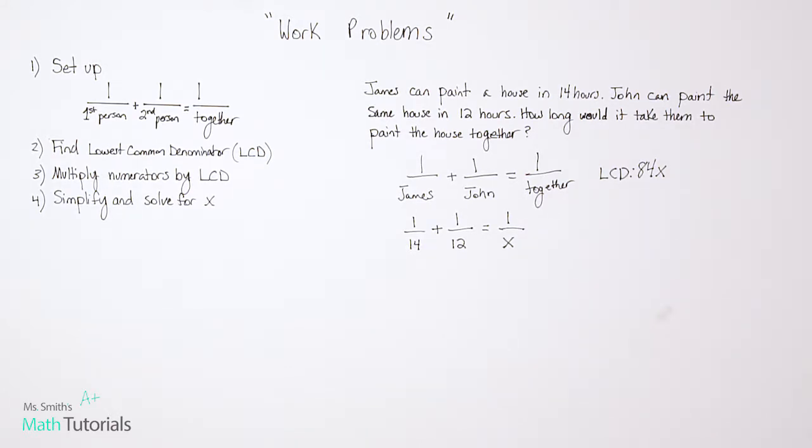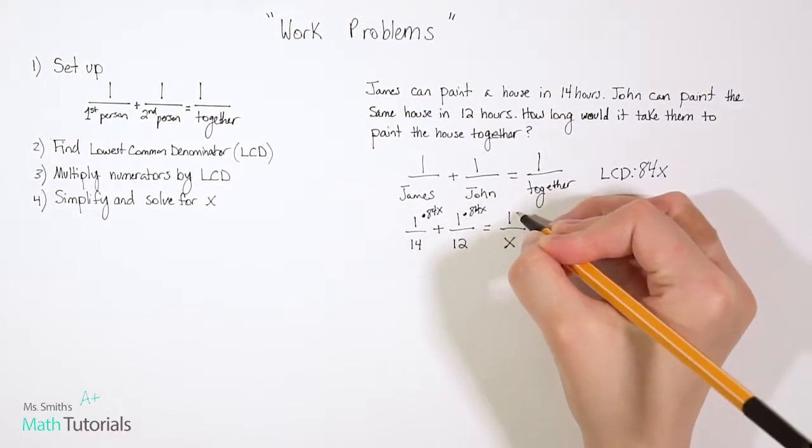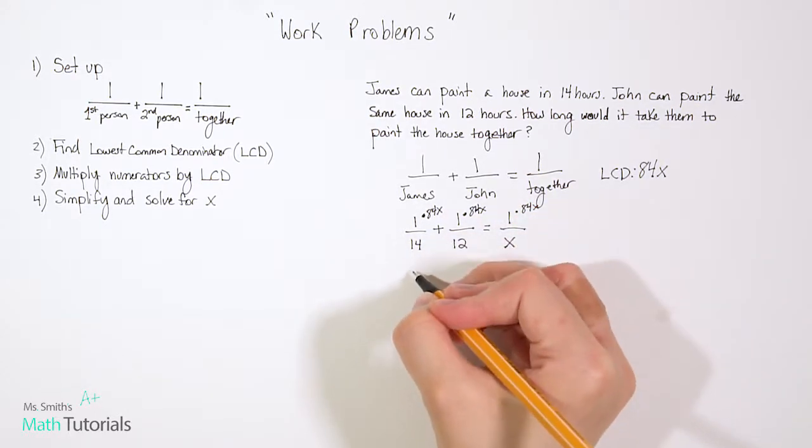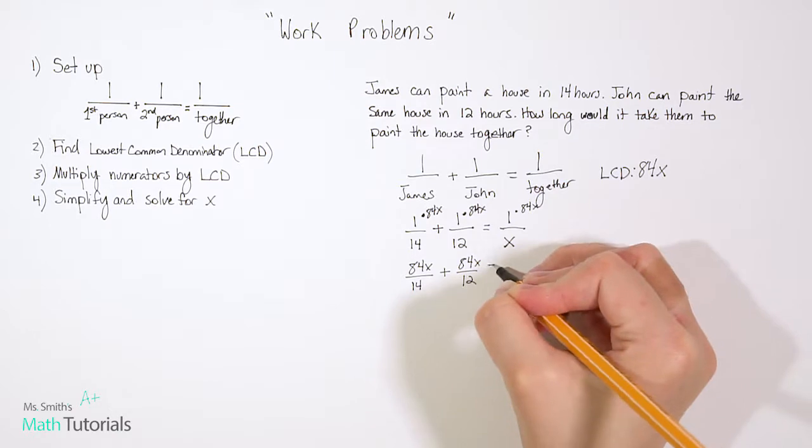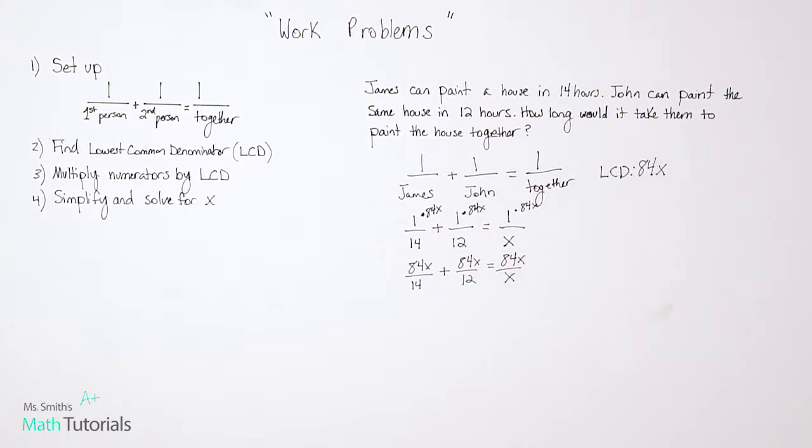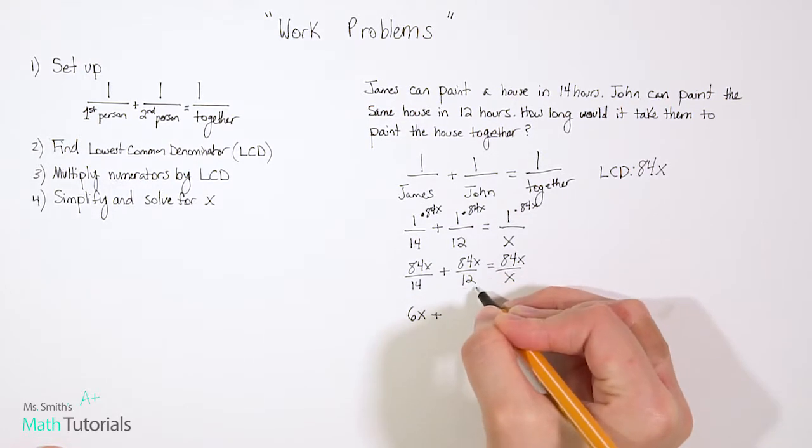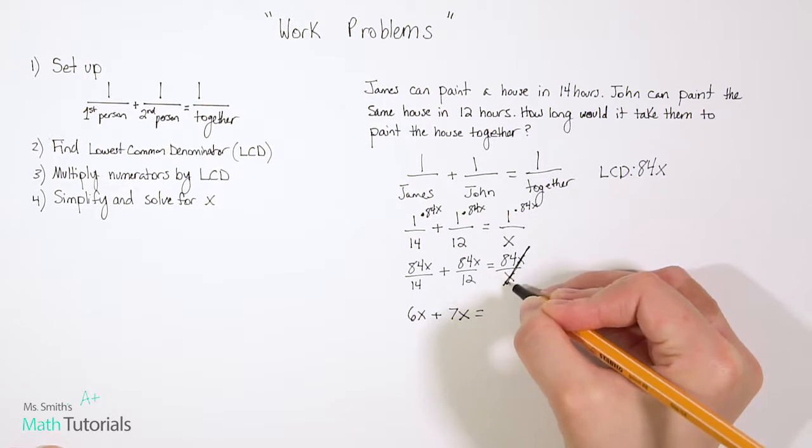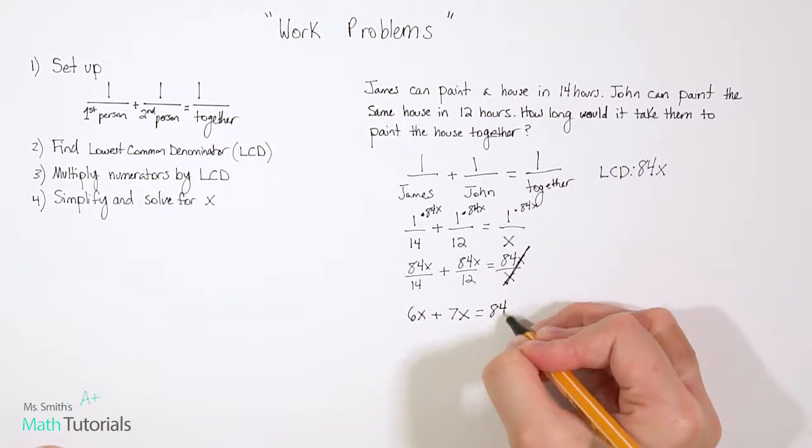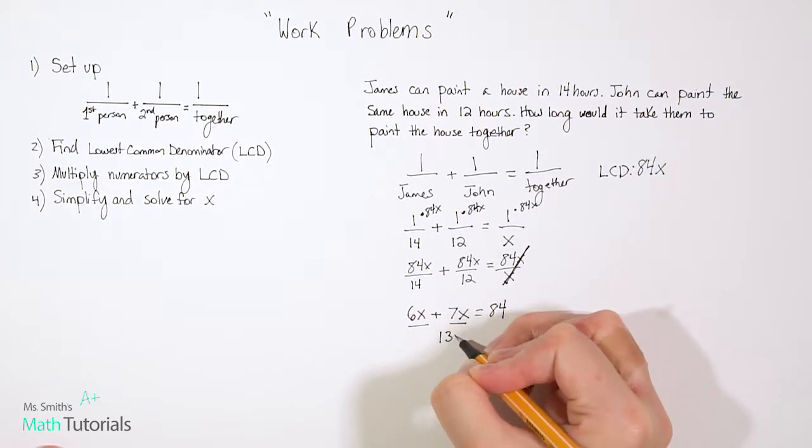So now our next step says multiply all the numerators by the LCD. So we'll multiply one by 84x, one by 84x, and one by 84x. So that's pretty easy multiplication, right? One times anything is just exactly what you start with. And then we'll have 84x over 14 plus 84x over 12 equals 84x over x. Now we want to actually divide. 84 divided by 14 is going to give us 6x, and 84x divided by 12 is going to give us 7x. And then for this one, our x's cancel. Notice how you have one in both the numerator and the denominator, so those cancel and we're just left with 84. Now we'd want to combine these like terms. 6x plus 7x is 13x equals 84.